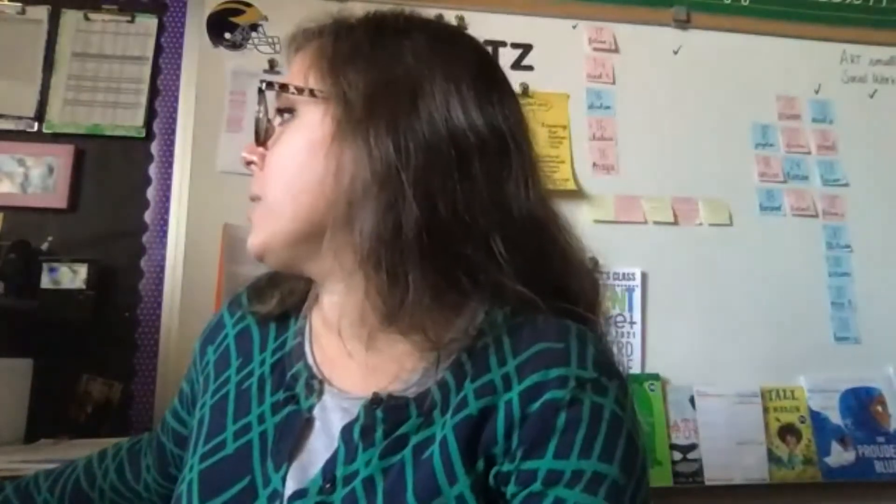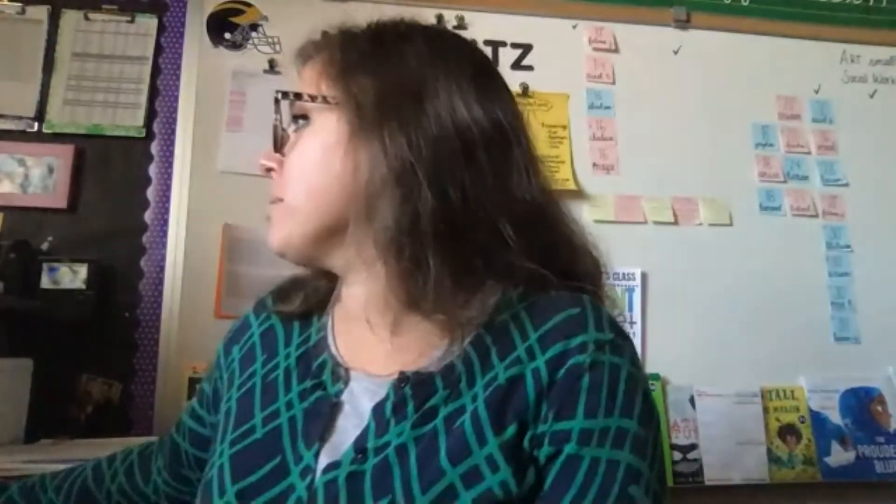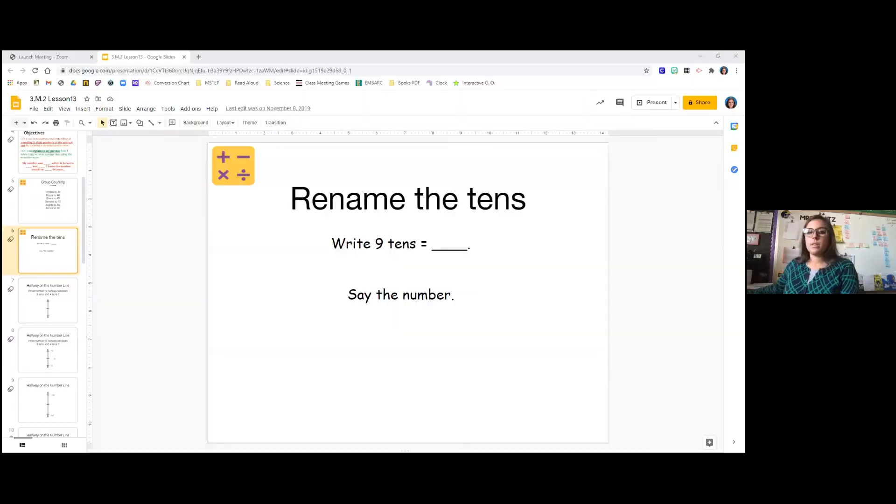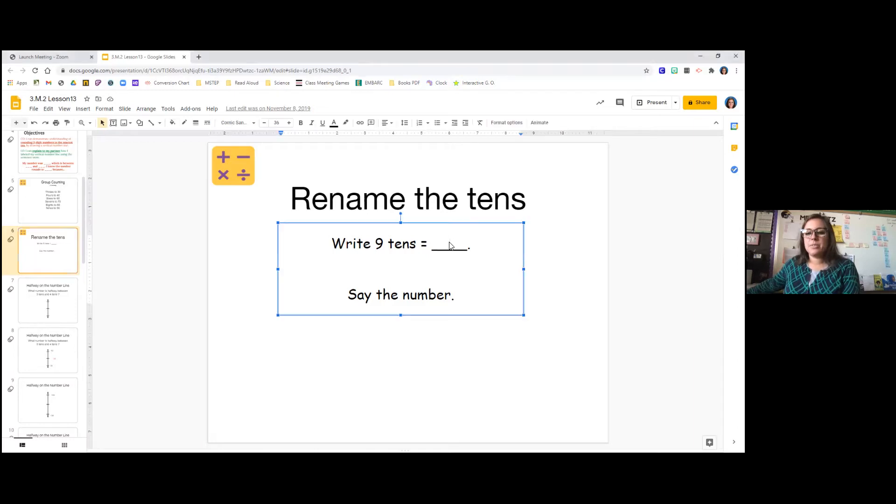Awesome. Okay, grab your whiteboard and let's do some practice. So you don't have to write anything for this. I know it does say write. I guess you could write it. But write nine tens as a number. So nine tens as a number is nine and then with a zero at the end for tens. So nine tens equals, say it with me, 90. Very good.